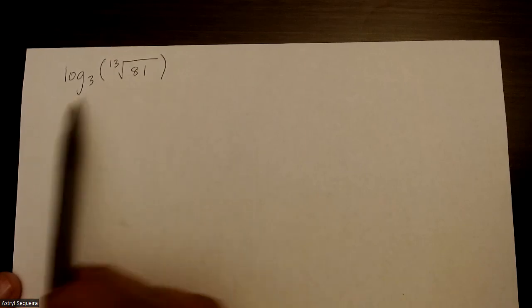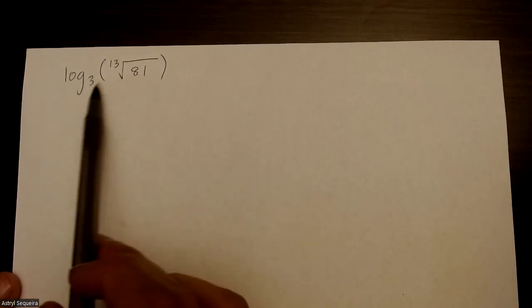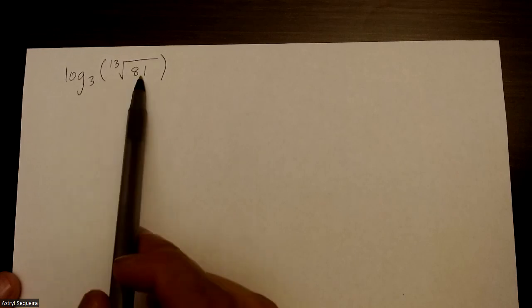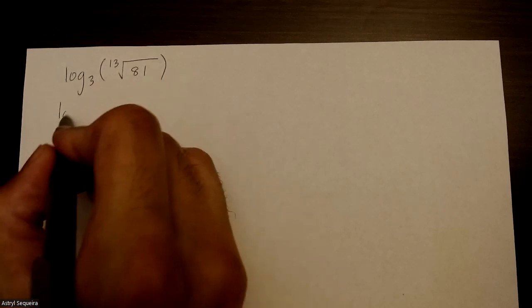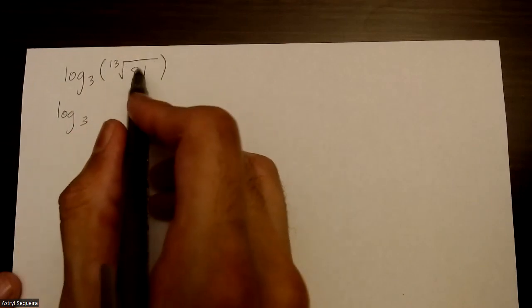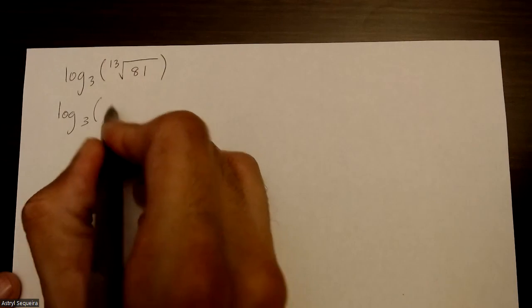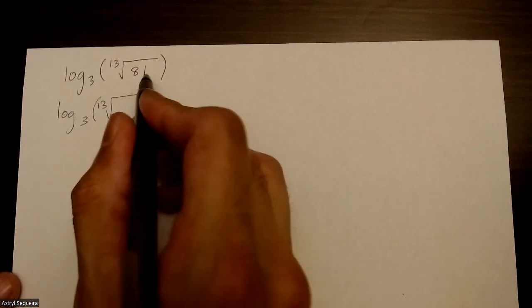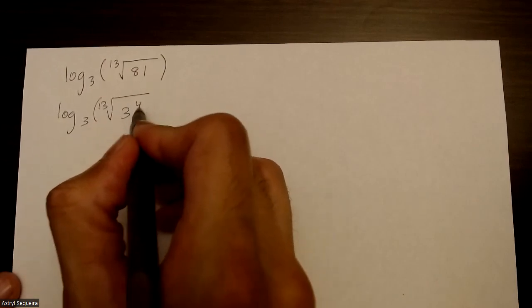Okay, so we want to find the exact value of this log. You want to try and make these two numbers the same if possible. I'm going to start by actually getting rid of my 13th root over here, or actually I'll change this number first. So I know that 81 is just 3 to the power of 4.